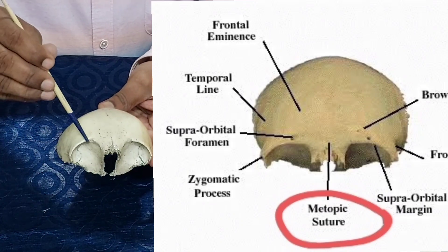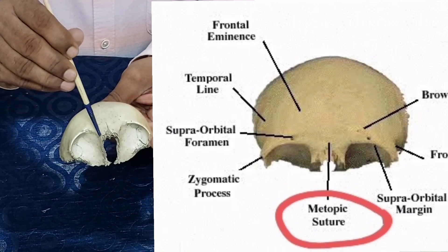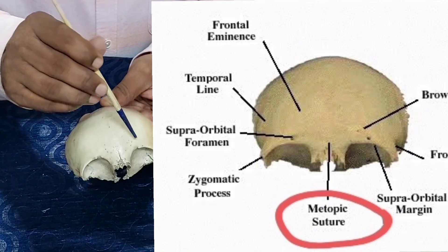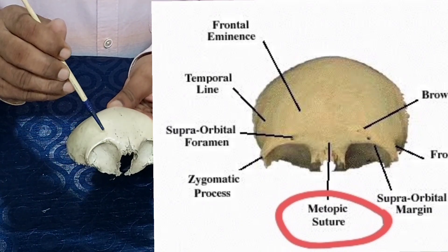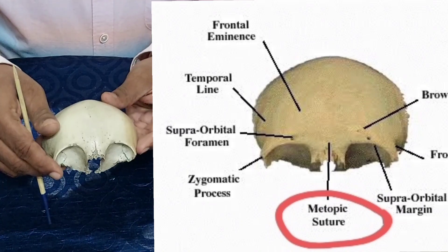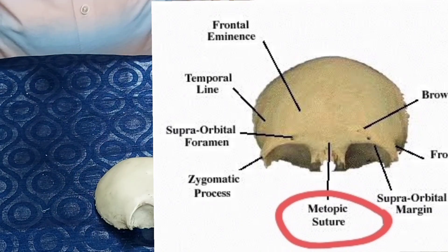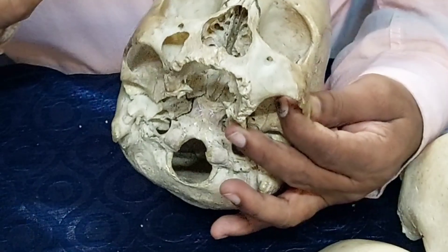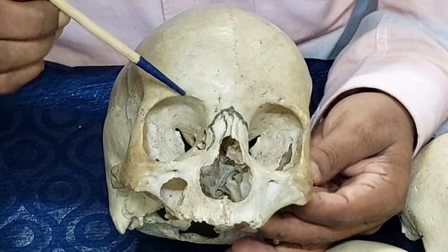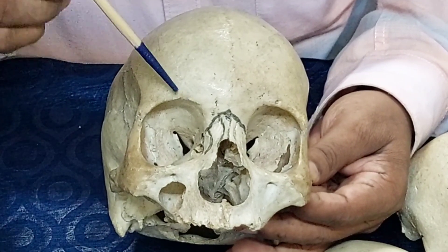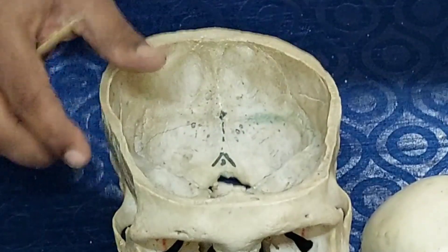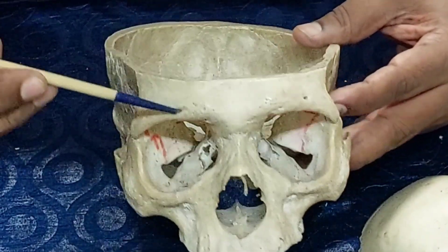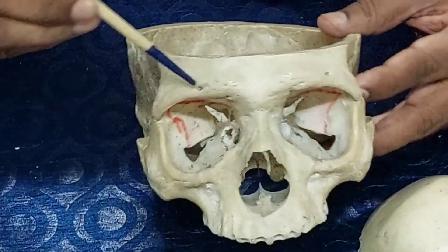At the junction of the lateral two-thirds and medial one-third of the supraorbital margin, just above the margin, there is a notch or foramen called the supraorbital foramen. On one side the foramen may be replaced by a supraorbital notch. On this bone you can see the supraorbital foramen present on both sides.